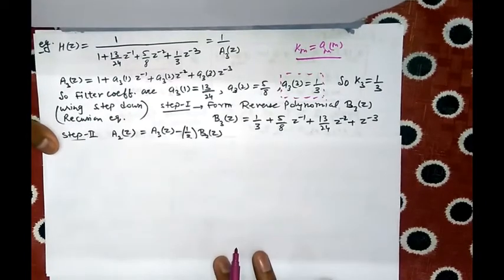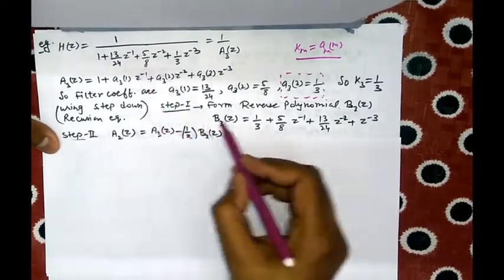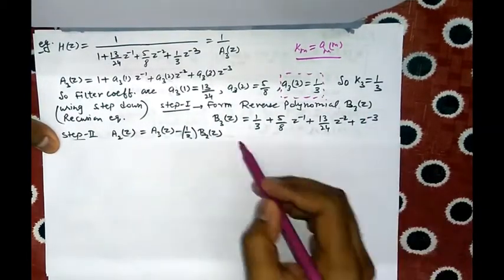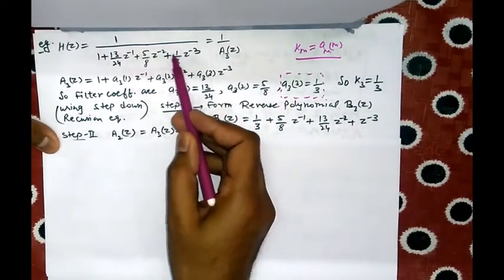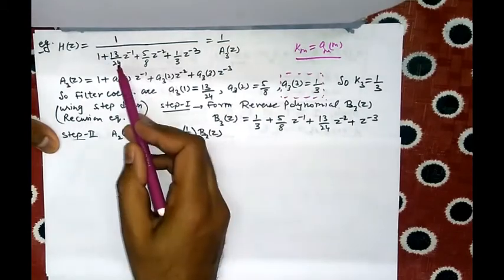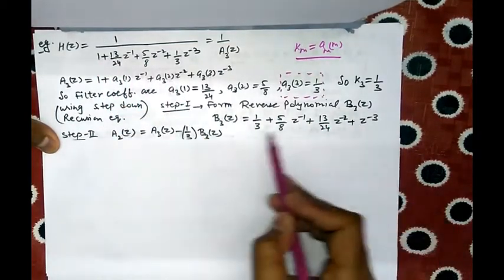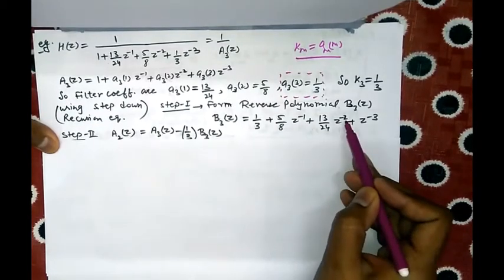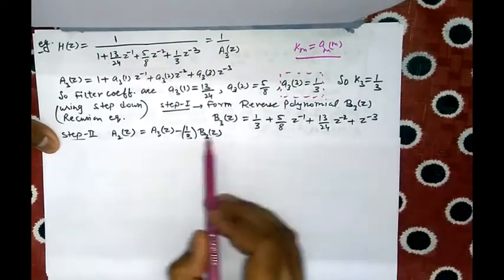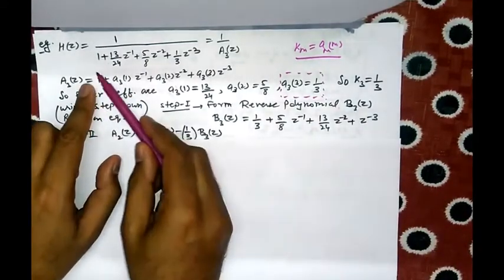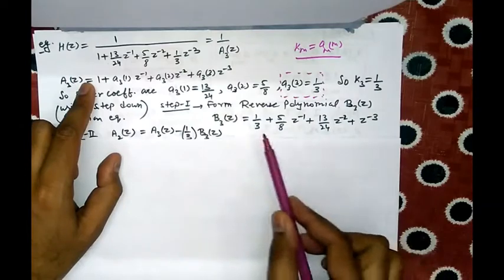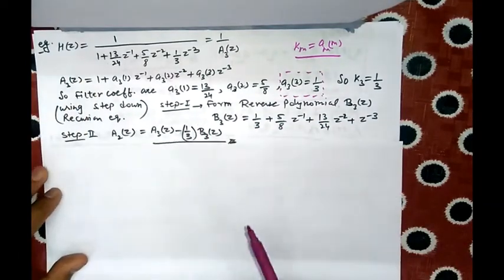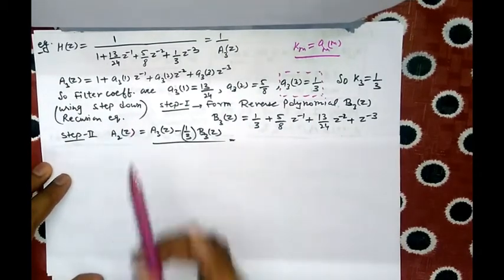Step 1 is forming the reverse polynomial of A3(z). The reverse polynomial B3(z) is formed by reversing the coefficients — the highest coefficient comes first, and the first coefficient comes last — while the powers z⁻¹, z⁻², z⁻³ remain the same. So the original coefficients 1, 13/24, 5/8, 1/3 become 1/3, 5/8, 13/24, 1 in reversed order. Then for Step 2, we use the step-down recursion formula.